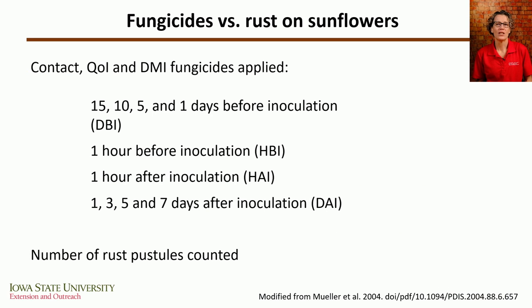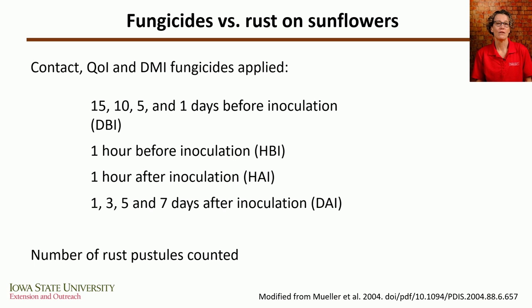To illustrate preventative and curative properties, I'll use research that Darren Mueller did during his postdoc. He looked at the activity of contact, QOI, and DMI fungicides against rust on sunflowers. He applied these fungicides 15, 10, 5, and 1 days before inoculation; 1 hour before inoculation; 1 hour after inoculation; and then 1, 3, 5, and 7 days after inoculation. He then counted the number of rust pustules on the sunflowers.